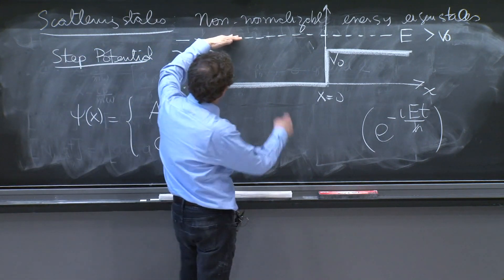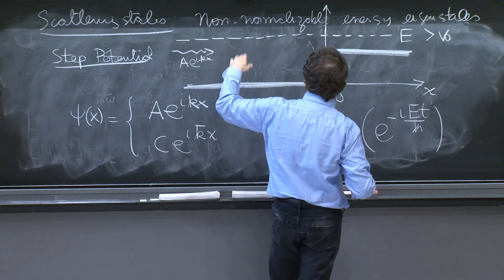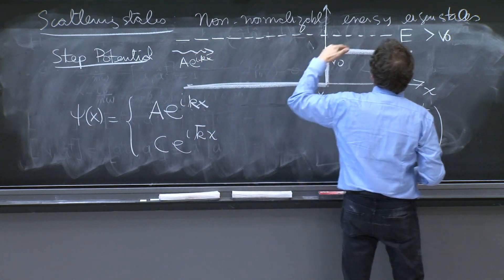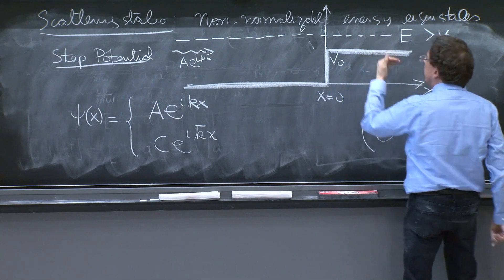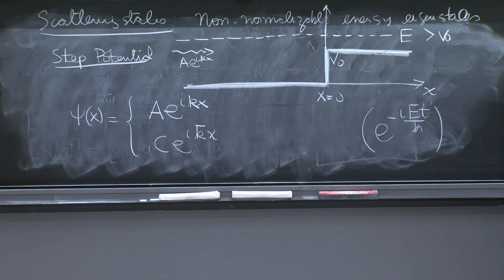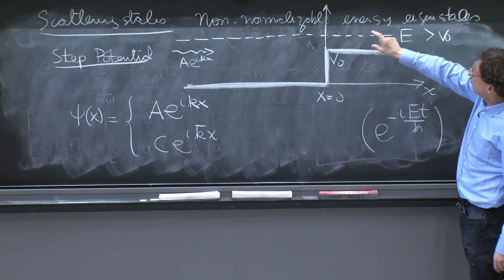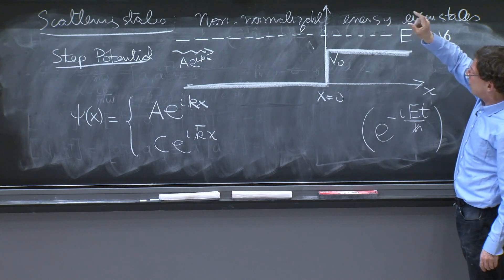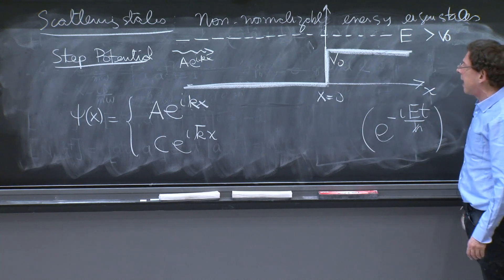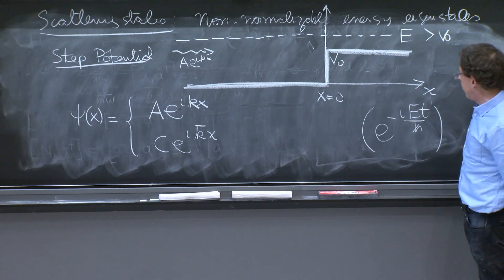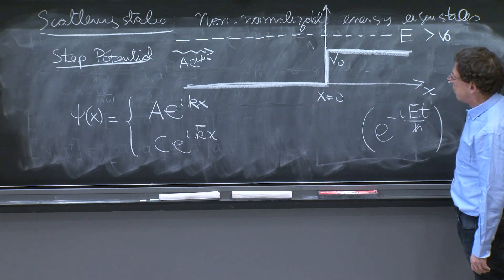I say the following. Here, the energy is bigger than the potential, so it has to be a wave. But here, the energy is still bigger than the potential, so it also must be a wave. But a wave with different kinetic energy, different momentum, therefore different de Broglie wavelength, and different k. But we know from Schrodinger's equation what that should be.